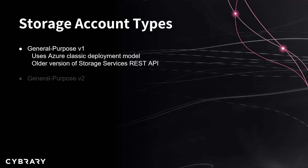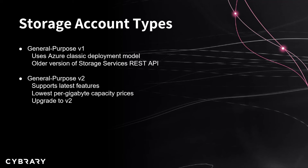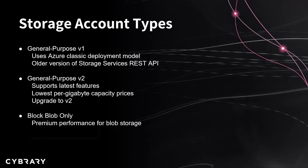What's recommended right now is that you use a general purpose v2 storage account. This supports all the latest features, and you're going to get the lowest per gigabyte capacity prices inside this type of storage account. And what's great is if you have a general purpose v1, you can easily upgrade to v2 without moving your data around — it's as simple as a click inside our storage account configuration. We do also have a block blob only storage account type, which is premium performance for blob storage. It's recommended that if you're just going to have block blob storage, to go ahead and provision a general purpose v2 storage account.